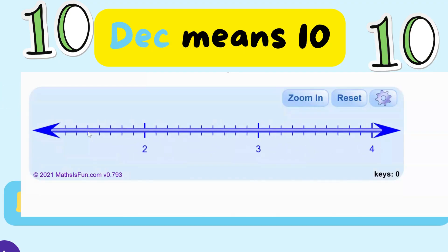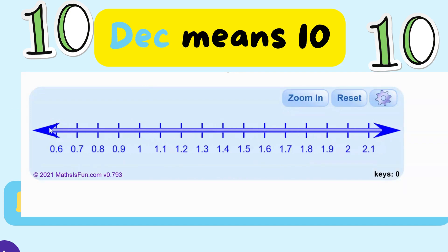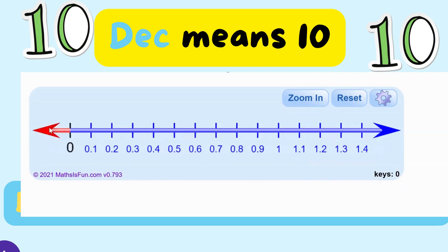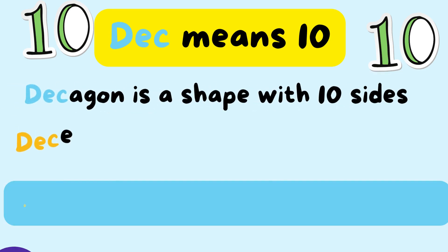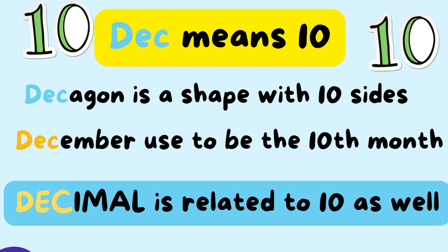Now, going from fractions to decimals. Decimals are those tiny, tiny numbers that you find in between whole numbers. The prefix 'deci' means 10 — like a decagon is a shape with 10 sides, or December used to be the 10th month. And decimal is also related to the number 10.